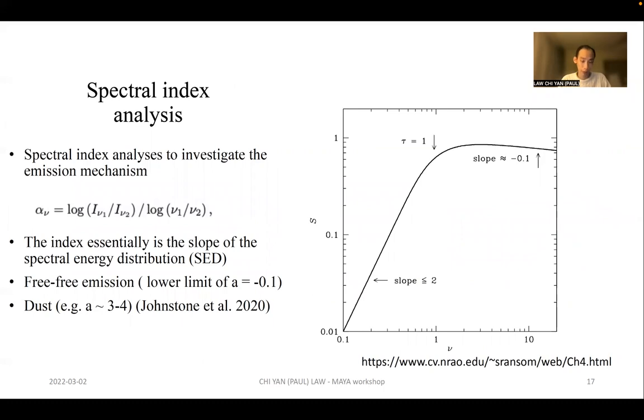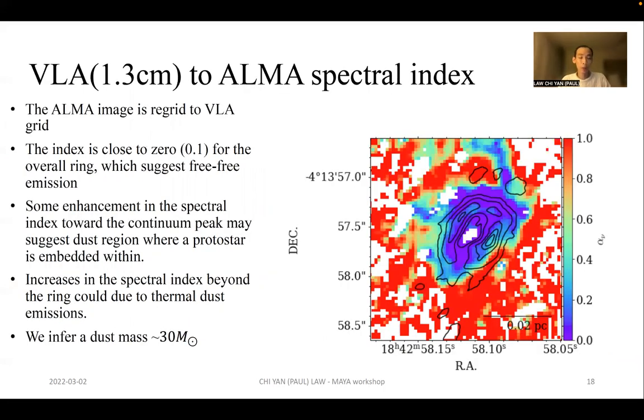To do this, we need to study spectral index, which is defined by these equations. The index is the slope of the spectral energy distribution. Here we show an example of H II regions. For optically thick cases, the slope or the index will be smaller or equal to 2, and in optically thin cases with a lower limit of -0.1, compared to thermal dust emission which has an index of 3 to 4. To do this, we do a pixel-by-pixel analysis. We regrid the ALMA image into the VLA grid, then do the index analysis. From here we can see that mostly the values are close to zero.